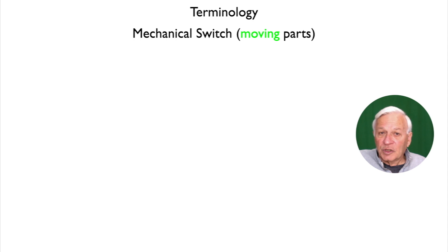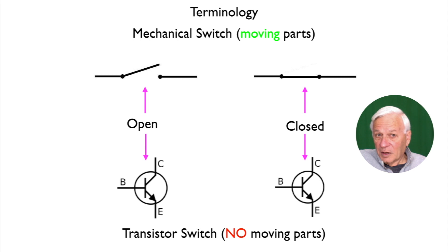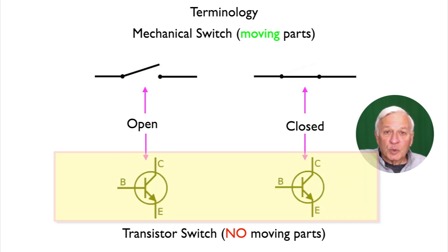Notice the terminology differences. A mechanical switch has moving parts, and the diagrams look like this. A transistor has no moving parts, and the diagrams look like this. Notice the mechanical switch diagram — it actually changes, and so does the word. Open changes to closed. But the computer switch diagram, the word changes — open changes to closed — but the diagram doesn't change. It stays the same.